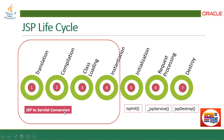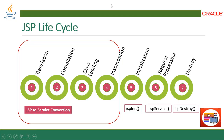Once the servlet is created and the instance is created, the next step is initialization — that is your JSP init. Like the servlet has the init method, JSP init initializes your instance. Request processing implements your JSP service method. And then at the end we have destroy. This is how your JSP lifecycle goes.